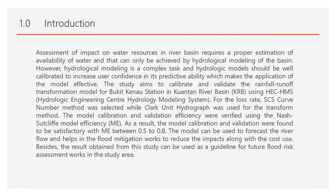Number one is Introduction. Assessment of impact on water resources in a river basin requires a proper estimation of availability of water, and that can only be achieved by hydrological modelling of the basin. However, hydrological modelling is a complex task and hydrologic models should be well calibrated to increase user confidence in its predictive ability, which makes the application of the model effective. The study aims to calibrate and validate the rainfall runoff transformation model for Bukit Canal Station in Kuantan River Basin using HEC-HMS.